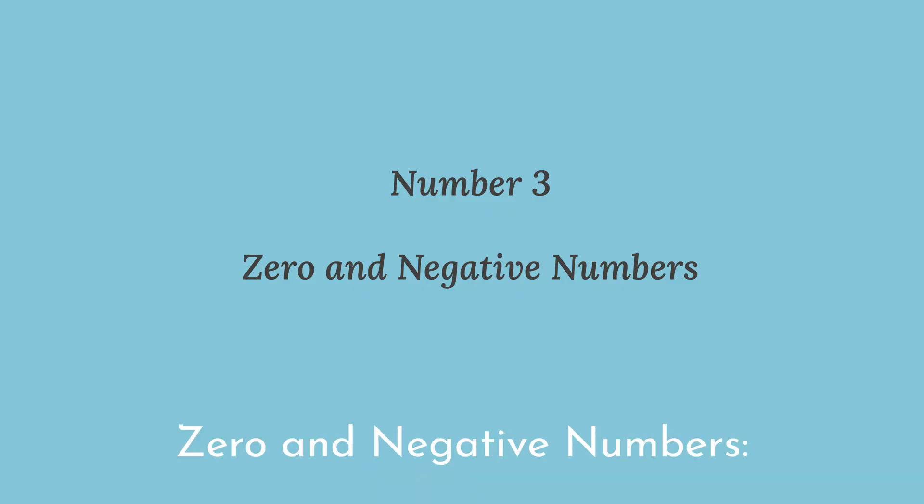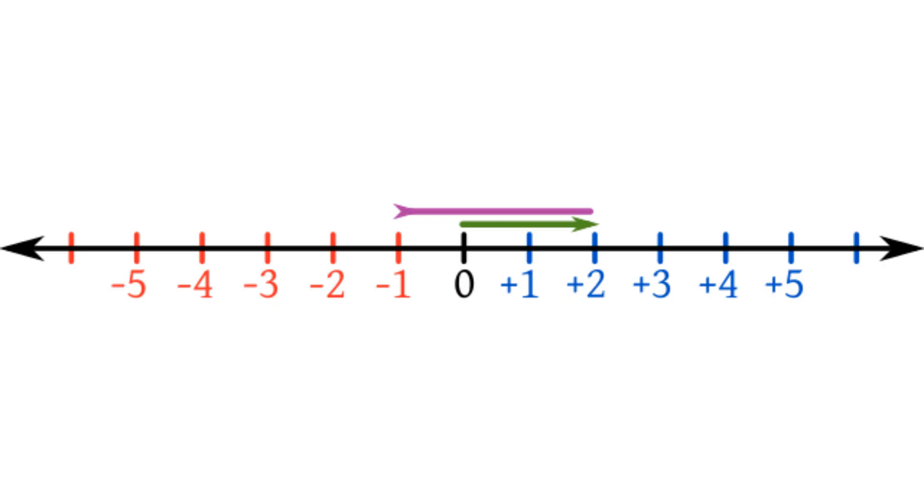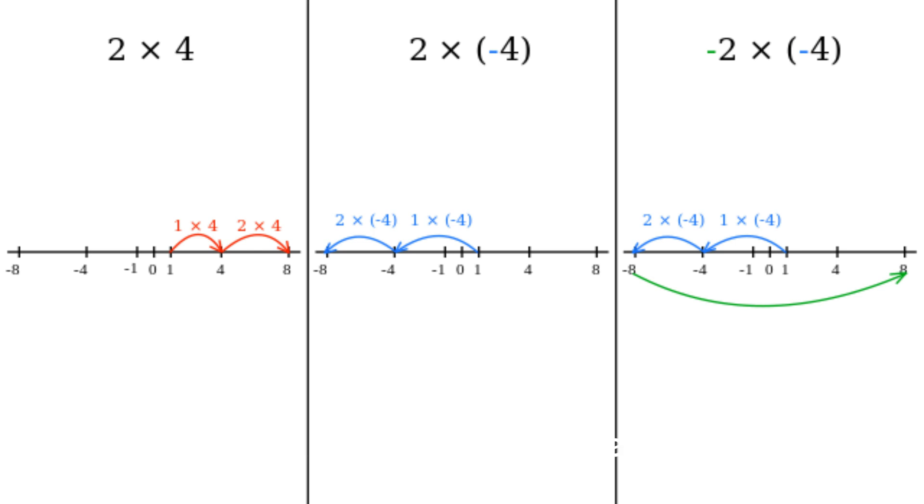Number 3. Zero and negative numbers. Brahmagupta made significant contributions to the understanding of zero and negative numbers. He discussed the rules for performing arithmetic operations with these numbers and their implications, which were groundbreaking in the development of mathematical notation and concepts.